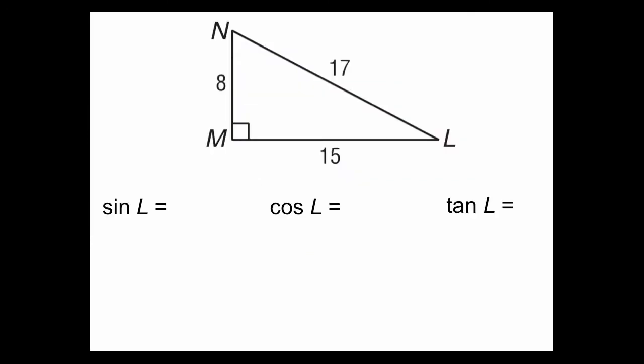So let's try an example. Here we're asked for the sine of L, the cosine of L, and the tangent of L. And that means L is our angle of reference. So that means 8 refers to the opposite, 15 is adjacent, and hypotenuse is 17. So the sine of angle L, opposite over hypotenuse, 8 seventeenths. Cosine is adjacent over hypotenuse. And tangent is opposite over adjacent.